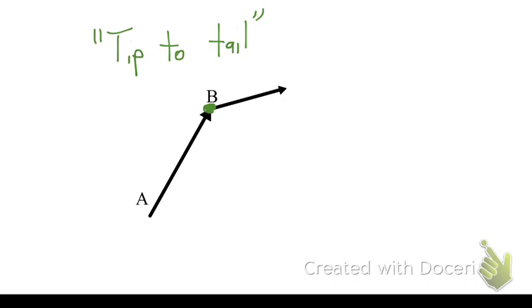Well, now, where one vector ends, at its tip of vector A, the next vector begins, the tail of vector B. And just like on a number line, my total answer will be the distance from where I started to where I ended.